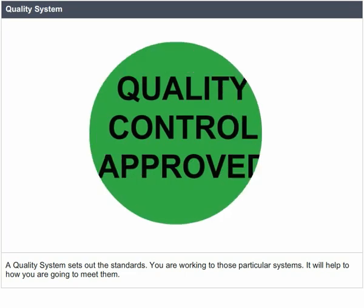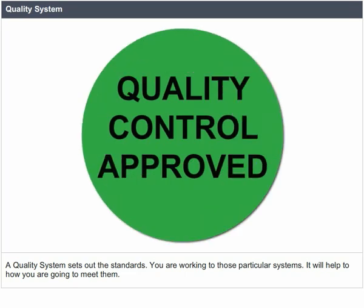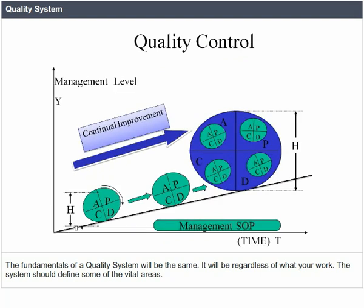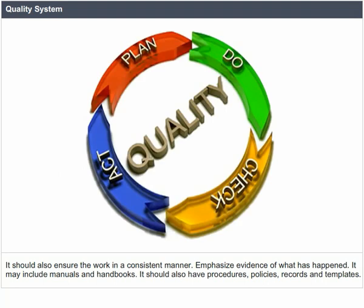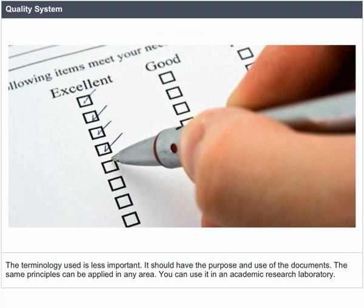A quality system sets out the standards you are working to and explains how you are going to meet them. The fundamentals of a quality system will be the same regardless of your work type. The system should define the audience, the actions and documents to be employed, and ensure work is done in a consistent manner. It should emphasize evidence of what has happened and may include manuals, handbooks, procedures, policies, records and templates.